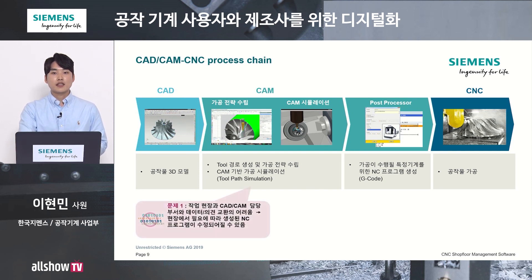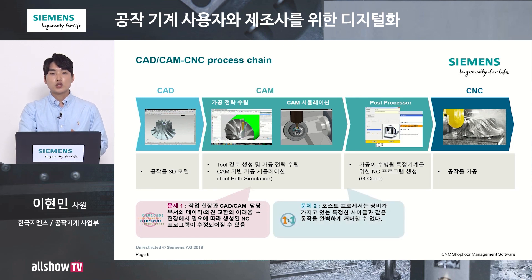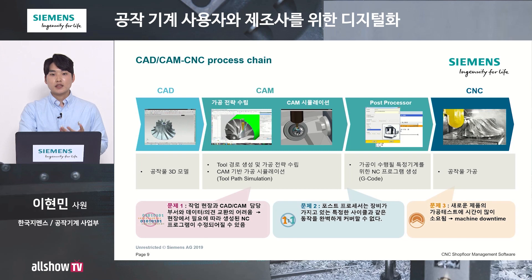첫째, 작업 현장과 CAD/CAM 부서 간의 데이터나 의견 교환이 생각처럼 쉽지 않습니다. 또한 가끔은 현장에서 가공 데이터를 수정하는 경우도 있습니다. 둘째, 모든 포스트 프로세스는 장비가 가지고 있는 특수한 사이클과 같은 동작을 완벽하게 커버할 수 없다는 점입니다. 셋째, 새로운 제품의 가공 테스트를 하기 위해서는 시간이 많이 소요되며 현재 생산하고 있는 가공 공정을 멈춰야 한다는 점입니다.